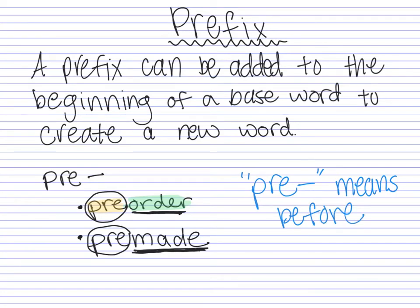I can also look at the word 'prefix' itself — since a prefix is added to the beginning of a word, that's why 'prefix' has the prefix 'pre' at the beginning. It's a little confusing, but it makes sense when you think about it. So our first prefix is 'pre,' meaning before. For example, pre-order means you are ordering before, and pre-made means something was already made before you have it.